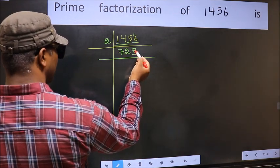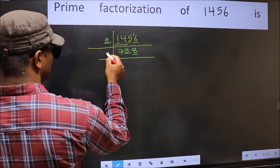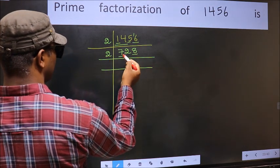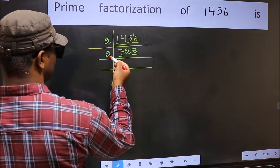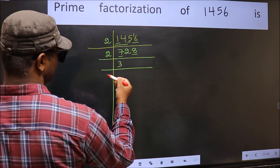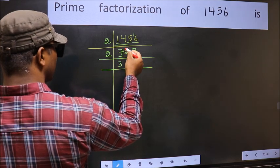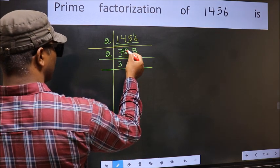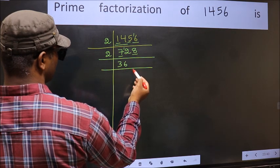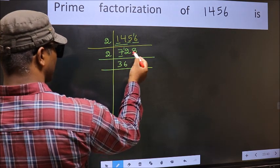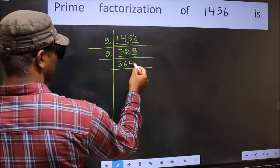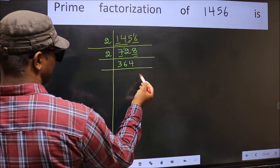Now last digit is 8. So take 2. First number is 7. A number close to 7 in the 2 table is 2 threes are 6. 7 minus 6 is 1, carried forward: 12. When do we get 12 in the 2 table? 2 sixes are 12. The other number is 8. When do we get 8 in the 2 table? 2 fours are 8.